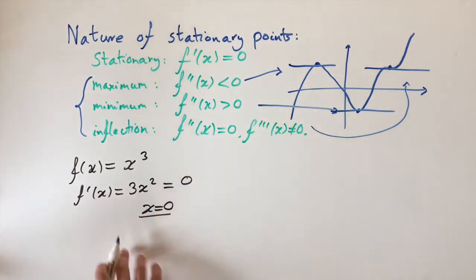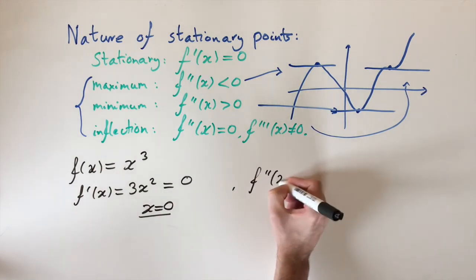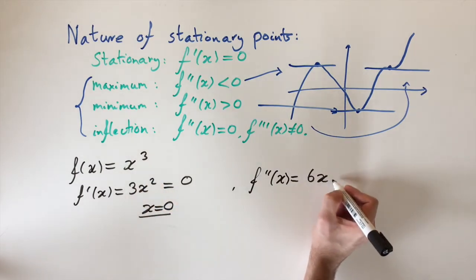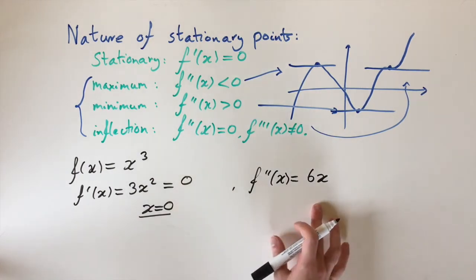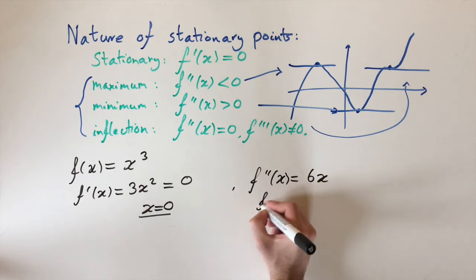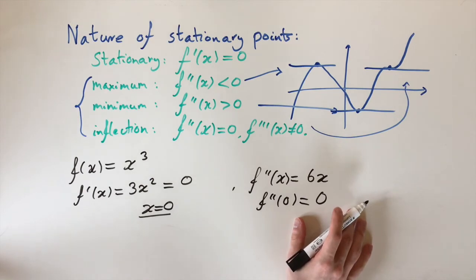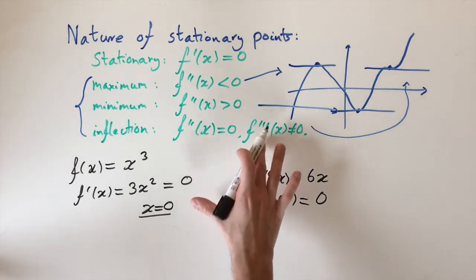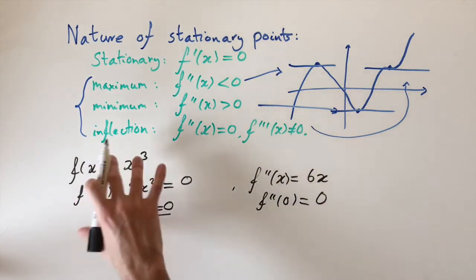Now we want to find the nature of this turning point. We find the second derivative: f″(x) — differentiate 3x², bring down the power — this gives us 6x. We now evaluate this at x = 0: f″(0) = 0. So at the moment we can't tell if it's a maximum, a minimum, or a point of inflection. We have to find the third-order information — we actually have to find the third derivative. If this is non-zero, then we know it's a point of inflection.